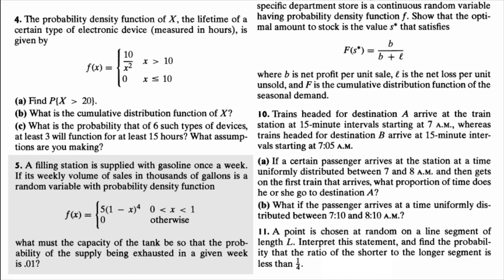So in this problem, we basically assume that the weekly demand in gasoline is described by a random variable, a continuous random variable X, described by the density function f of X equals 5 times 1 minus X at the power of 4, for X between 0 and 1, 0 outside this interval.